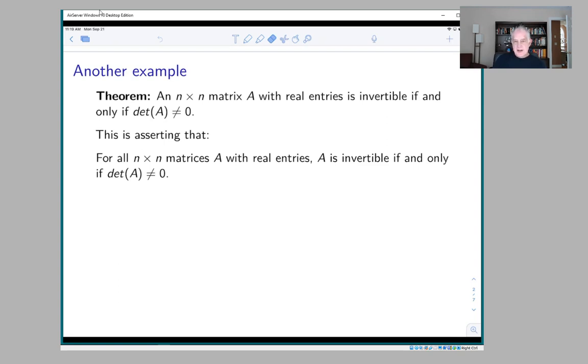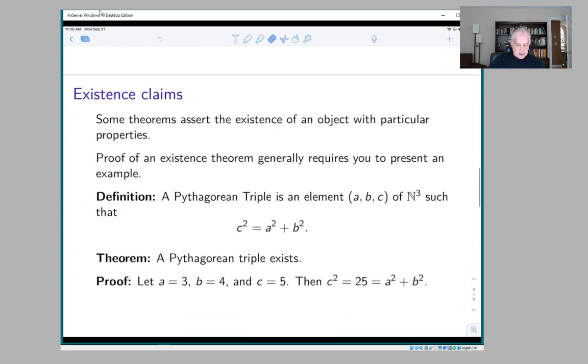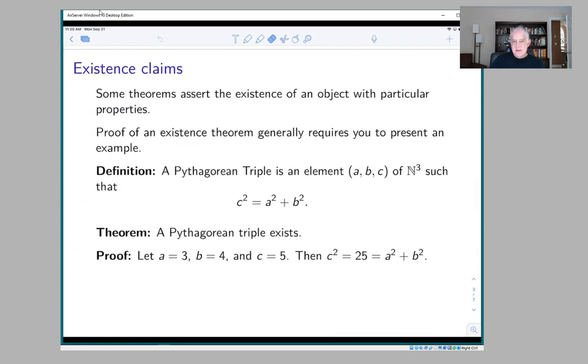Theorems about the existential quantifier are different. An existence theorem claims that something exists with particular properties. Usually to prove an existence claim, you have to present in some way an example of an object with those properties.